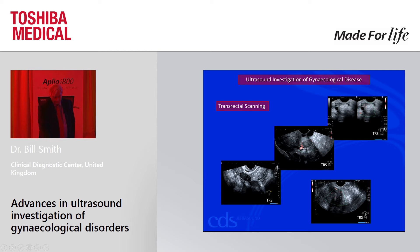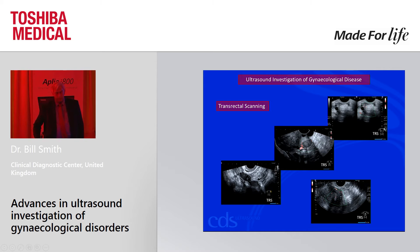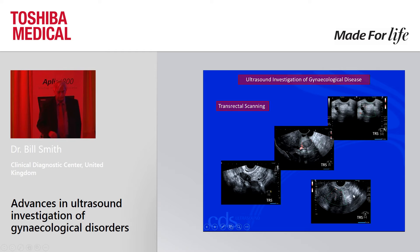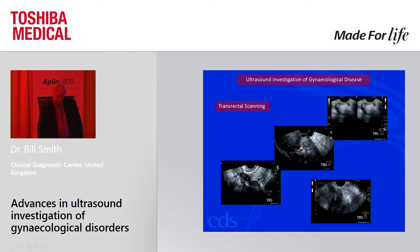Transrectal scanning — we wouldn't do routinely, but there are exceptional cases. This is a young, orthodox Jewish girl, and obviously we're not going to do a transvaginal scan on her. We're worried about what's going on around the ovary, and she has this dermoid cyst. A dermoid cyst in a 16-year-old worries us, but it's transrectal scanning that gives us the information. Going to the other extreme in terms of age — this is an 80-year-old who can't fill the bladder and can't accommodate a transvaginal scan. The transrectal scan shows thickening of the endometrium, and again, it's a malignancy.